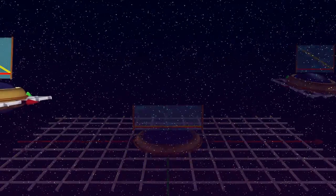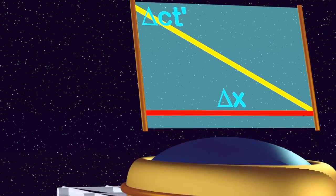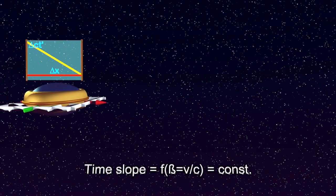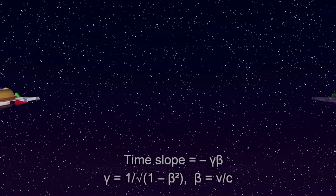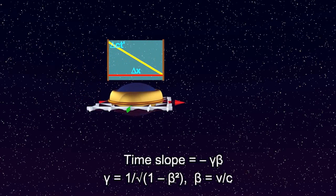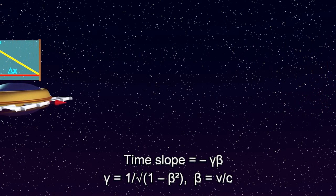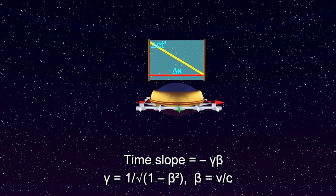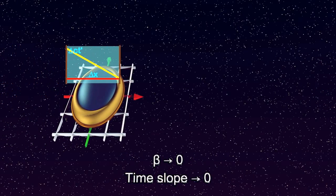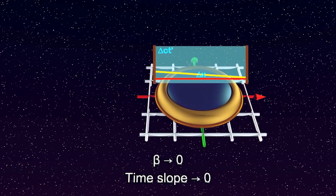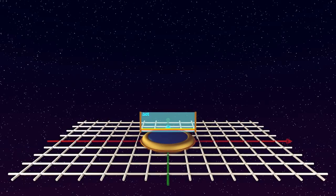The time slope represents the variation of proper time in the moving frame, as observed along the direction of motion in the stationary frame. For a uniformly moving frame, the time slope is constant and depends only on the frame's relative velocity along the direction of motion. In relativistic units, it is exactly proportional to the negative of the relative velocity by the factor of time dilation. As we expect, when the relative speed slows to zero, the time slope vanishes too. Let us call a space-time cross-section with vanishing time slope an instantaneous space-time cross-section.